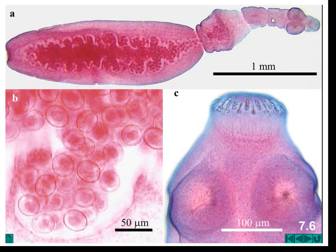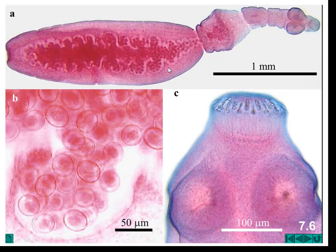The neck is a short portion following the scolex, which is followed by the body, called the strobila. The body has three proglottids or segments: the first is the immature proglottid, the second is the mature proglottid, and the third, which is the widest and largest, is called the gravid proglottid. This is a hermaphrodite where male and female genital organs are present in the same worm, and they get fertilized to form eggs inside the gravid segment.